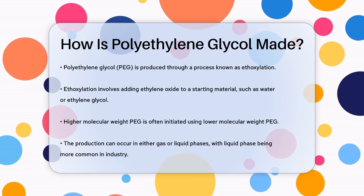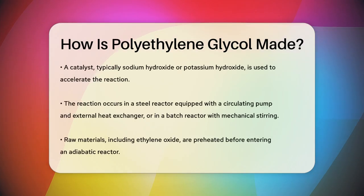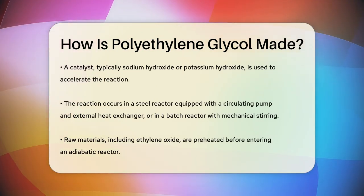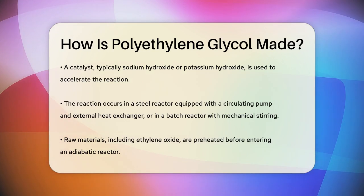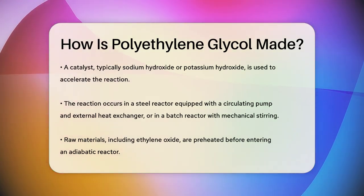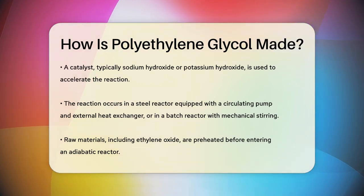The reaction can be carried out in either the gas phase or liquid phase, but in industry, liquid phase polymerization is more common. This process uses a catalyst, typically sodium hydroxide or potassium hydroxide, to speed up the reaction. The reaction takes place in a steel reactor equipped with a circulating pump and an external heat exchanger, or in a batch reactor with mechanical stirring.